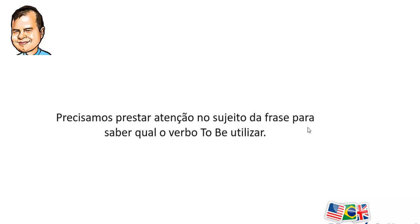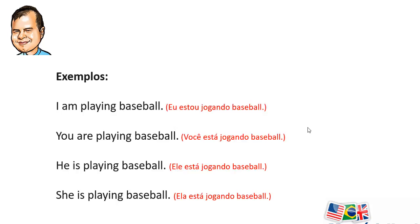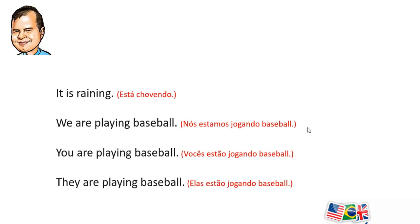We need to pay attention to the subject of the sentence in order to use the correct conjugation of the verb 'to be.' Here are a few examples: I'm playing baseball. You're playing baseball. He is playing baseball. She is playing baseball. It is raining. We are playing baseball. You are playing baseball. They are playing baseball.